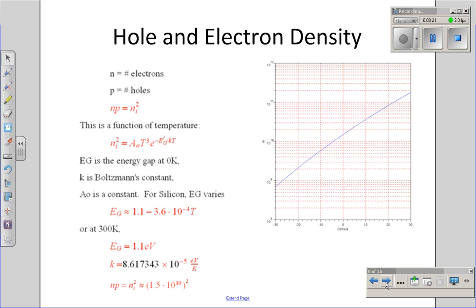In addition, the number of holes, number of electrons, are related to temperature. What that means is as temperature goes up, I get more and more charge carriers. The silicon that looks like an insulator at zero degrees Kelvin eventually starts becoming like a conductor. At room temperature, the number of electrons times the number of holes is the intrinsic carrier concentration. It's 1.5 times 10 to the tenth.